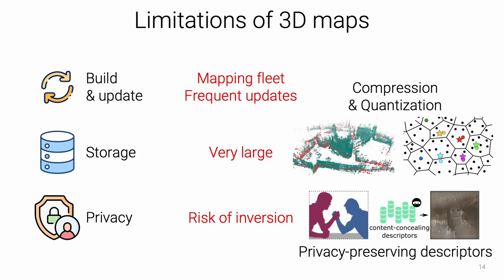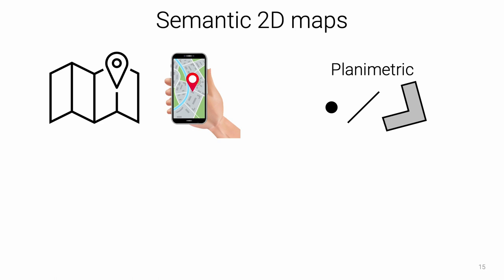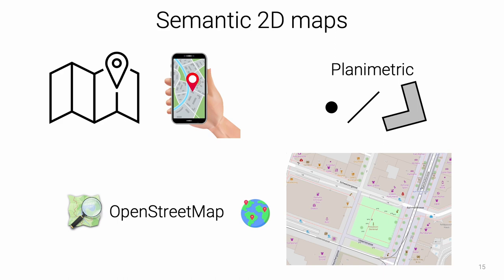In this paper, we suggest to instead use simpler 2D semantic maps. 2D maps are what humans typically use to find out where they are and to navigate their environment. Mobile map apps are used by billions of people every day. Planimetric maps encode the position and 2D shape of important objects, which are represented by points, lines, or polygons.